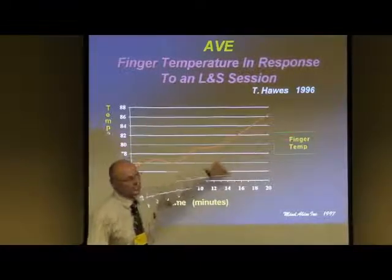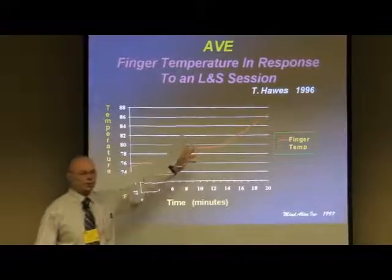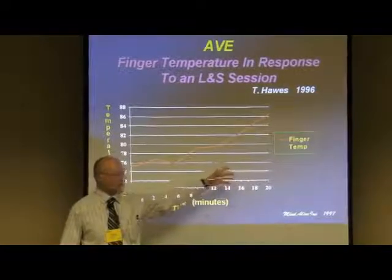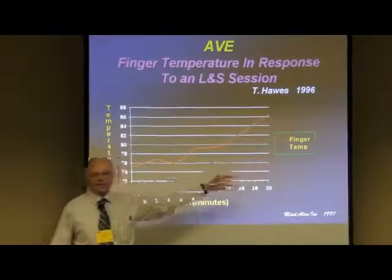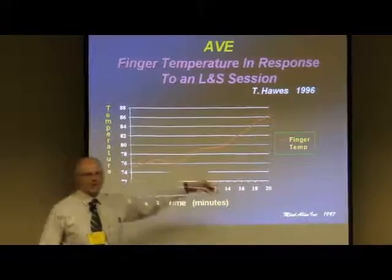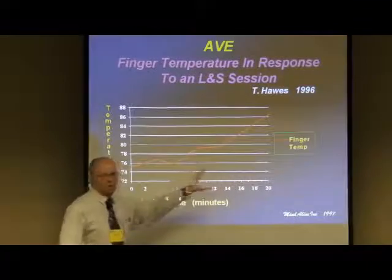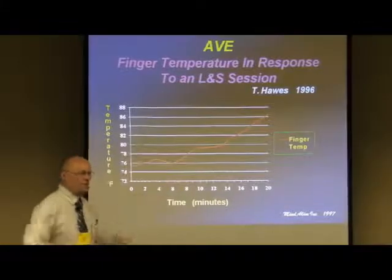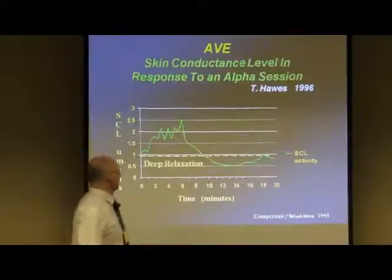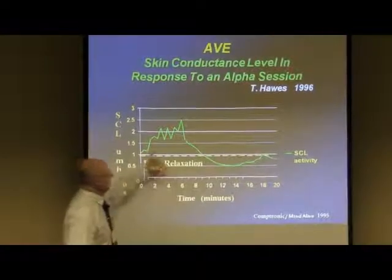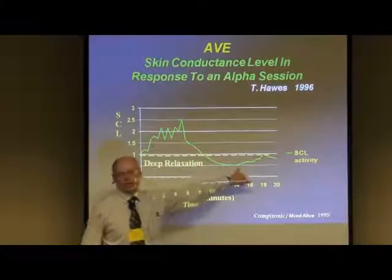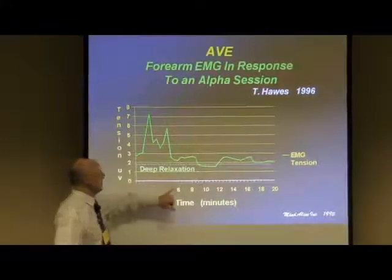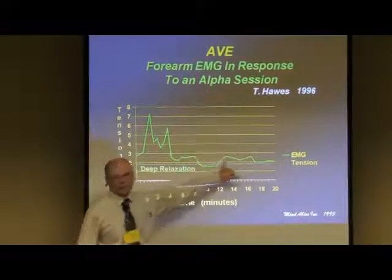I use this with temperature training — how many of you find that clients often fail the first four or five times and get hopeless and quit? If you use entrainment along with it, you can keep their fingers in a warming trend so they feel hopeful, and then slowly weed the entrainment off as you do more sessions. Here is skin conductance — look at about the six-minute mark, it really relaxes and goes way down. And here's a forearm EMG — at about the six-minute mark, muscles really relax.